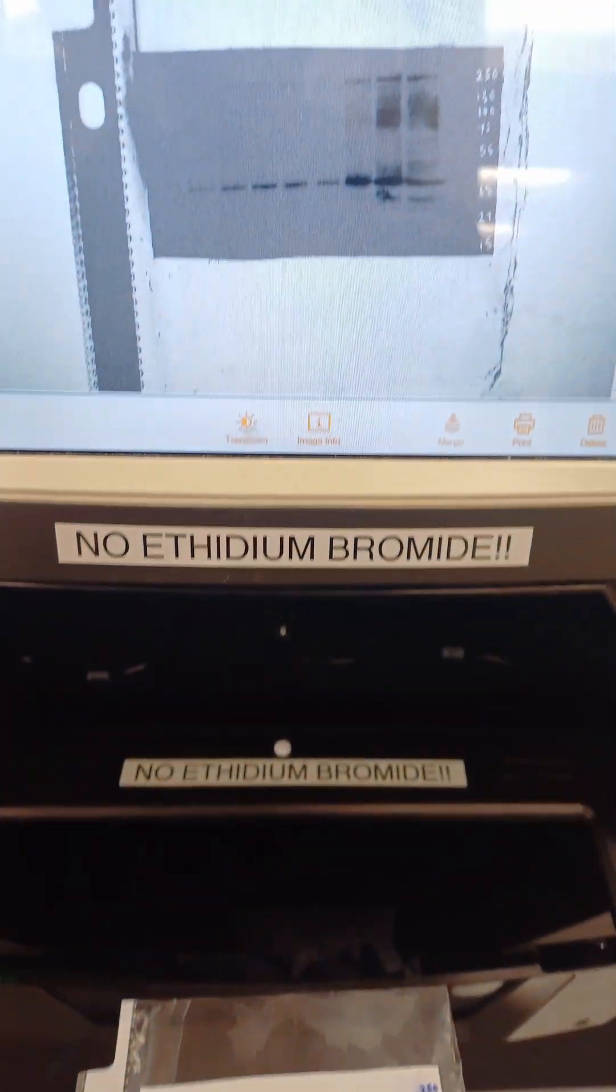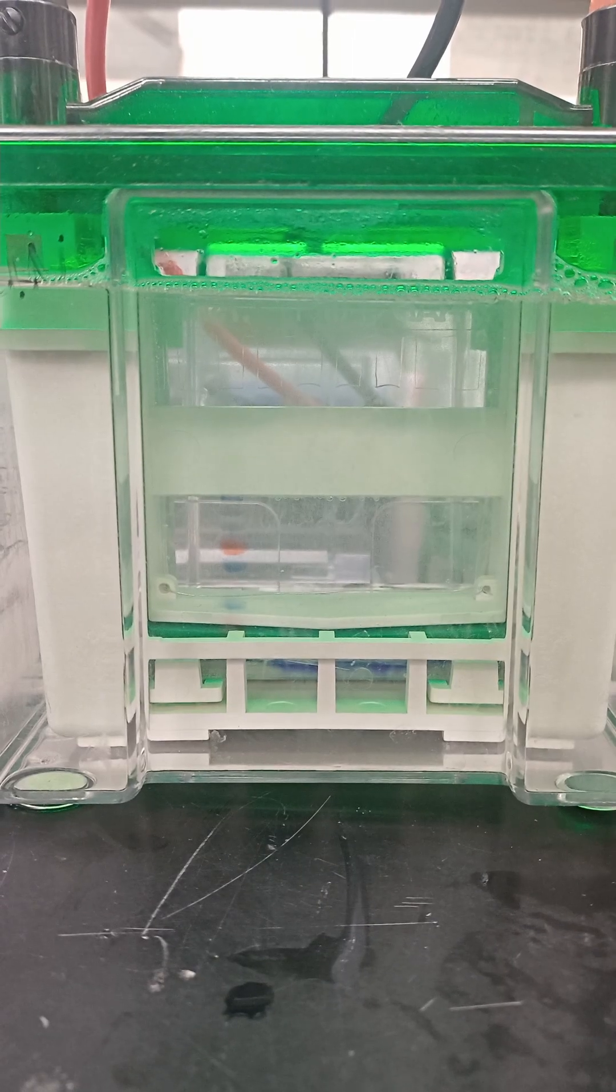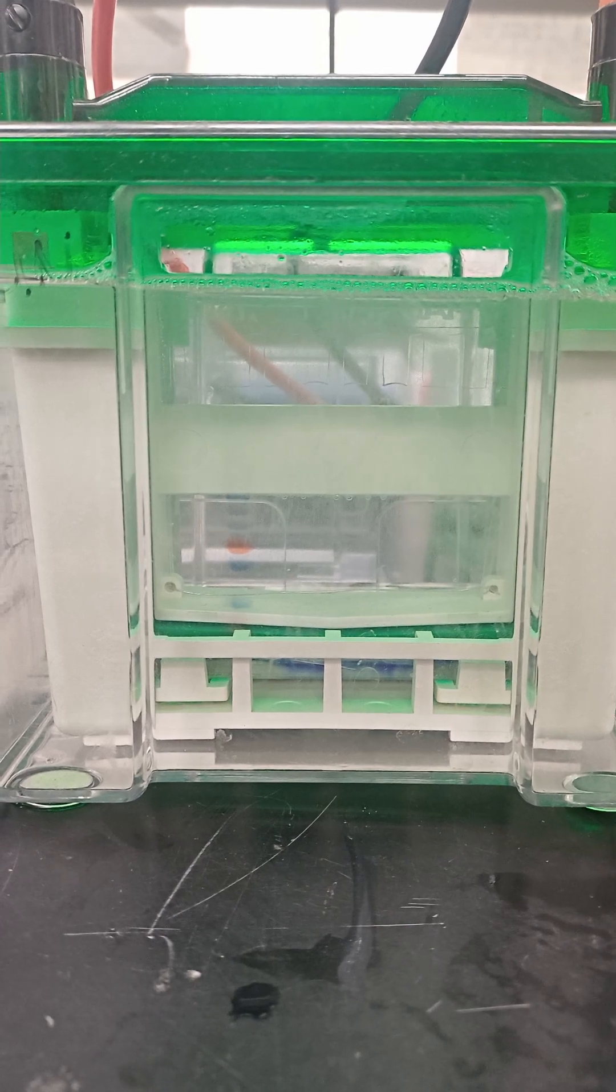Let's walk through how to perform a western blot step by step. We start by running an SDS-PAGE gel and go ahead with the transfer step.